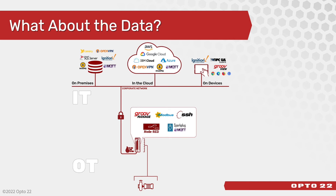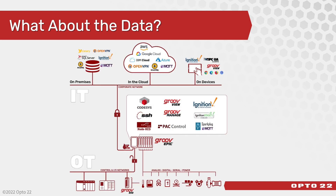So what about the data? That's where the real magic happens. Monitoring energy and power is not new, but what is different today is the incredible amount of IT tools available to historize, visualize, and perform analytics on that data. Onboard the RIO EMU is a tremendous tool set to help you do that easily — including Node-RED, Sparkplug MQTT transmission, secure shell access, and a RESTful API, to name a few.